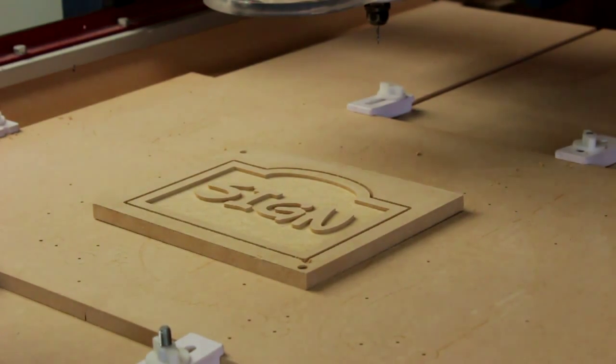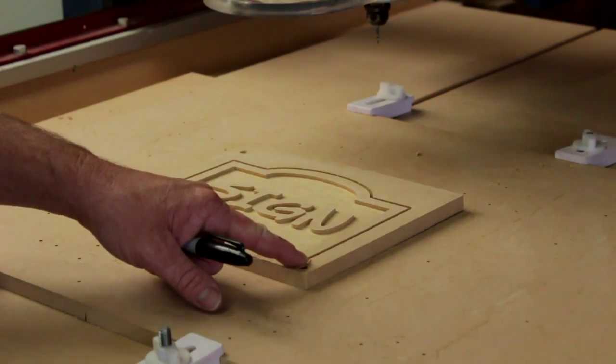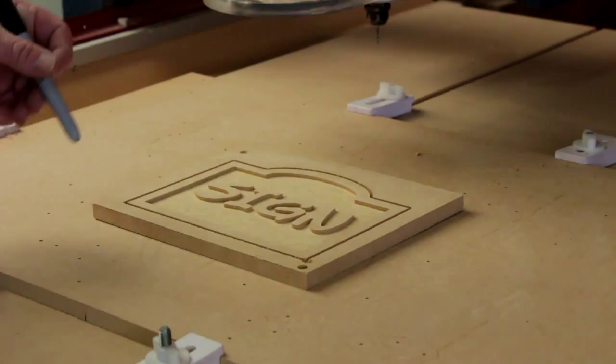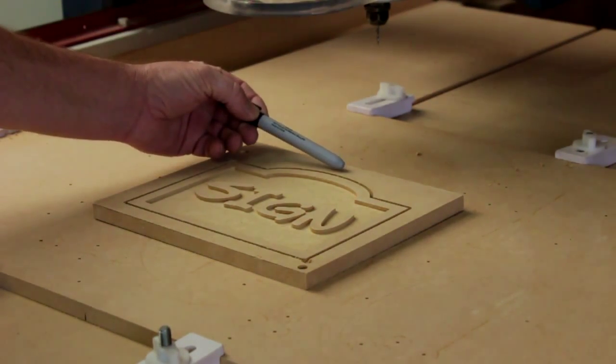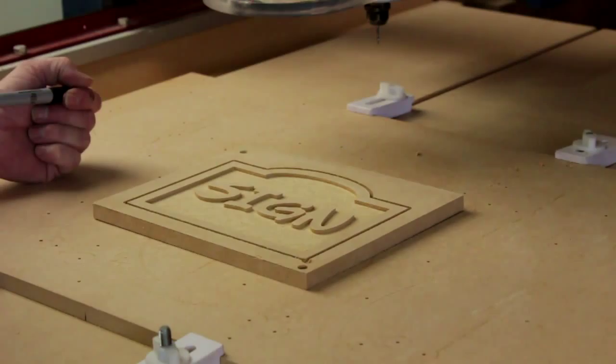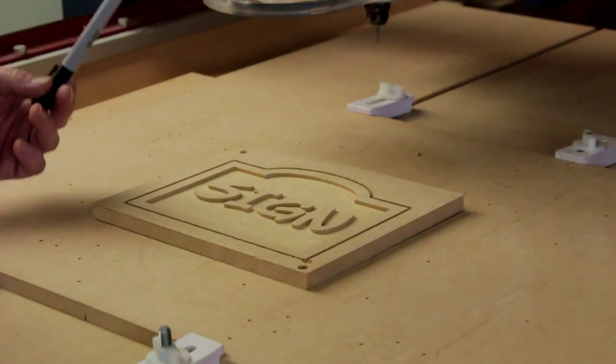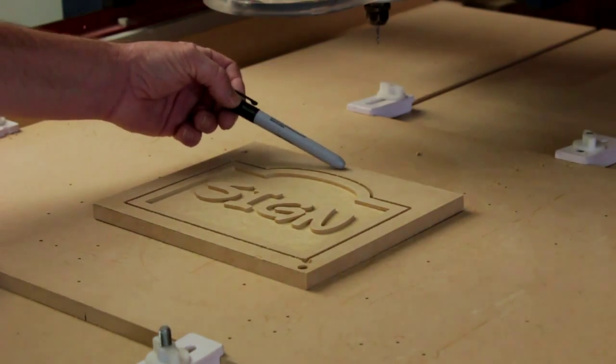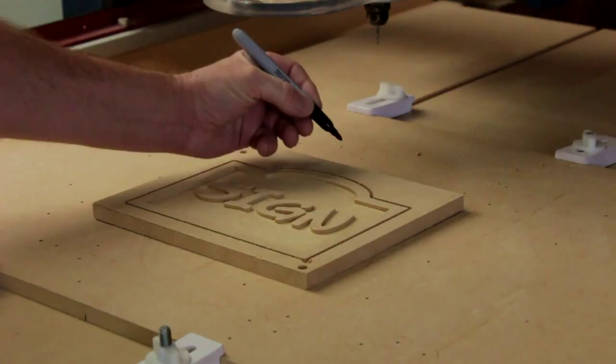So here's the first side of the sign complete. I had to remove a screw partway through the cut because the cutter looked like it was going to get a bit too friendly with it. Next, I need some method by which I can flip this sign and keep it perfectly registered with the other side.